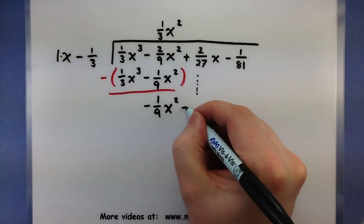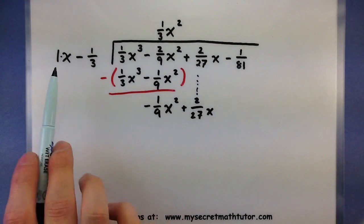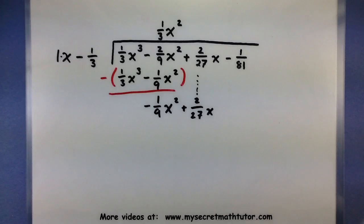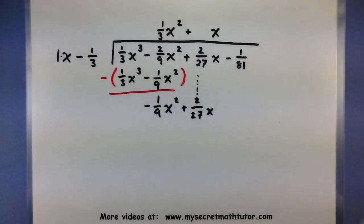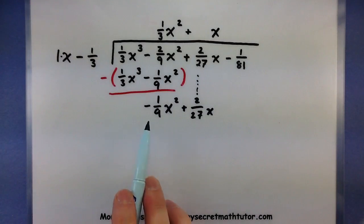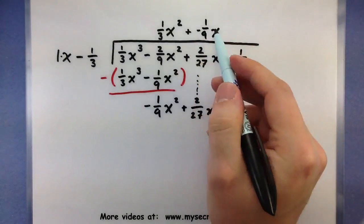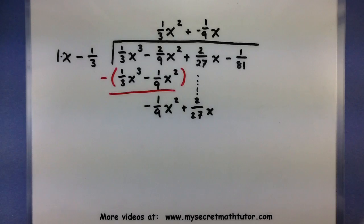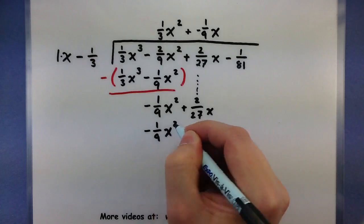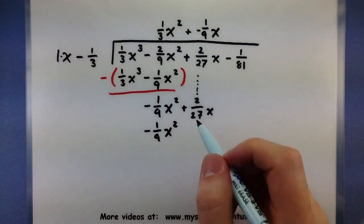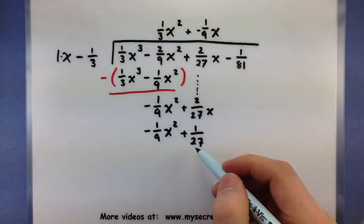Let's go ahead and bring down our next term and continue this process again. So, focus on the x's — what would you have to multiply x by in order to get x²? Well, we'll have to multiply by x. x times x is x². And to get negative 1/9, I'll have to multiply by negative 1/9. Negative 1/9 times 1 — perfect. Let's multiply through: negative 1/9 x². A negative times a negative would be positive 1/27 — 9 times 3 is 27. Awesome.